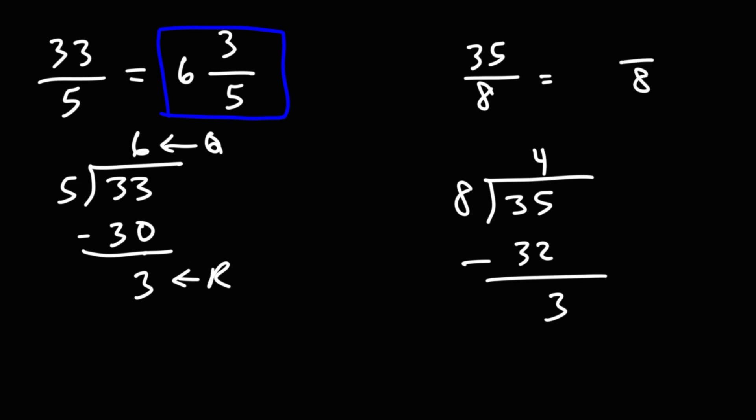So let's keep the denominator the same. The quotient is 4, so that's the whole number. The remainder is 3, that's going to go on top. So the answer is 4 and 3 eighths. To check, 4 times 8 is 32 plus 3, that gives us 35.